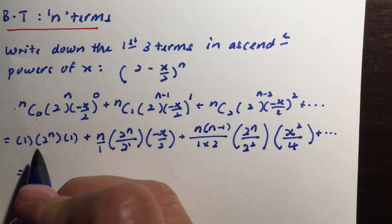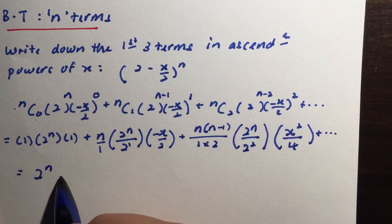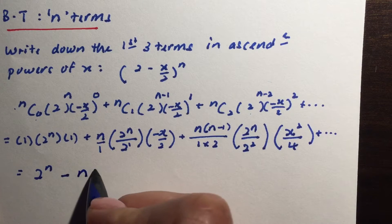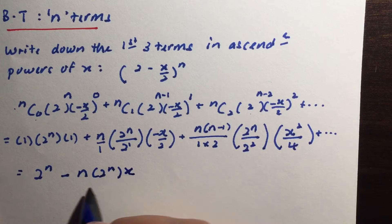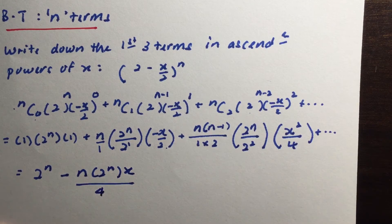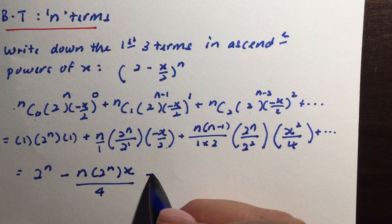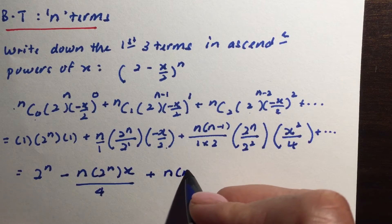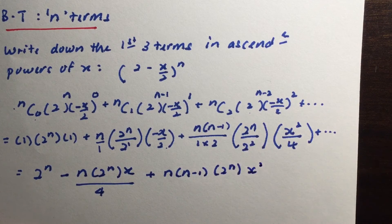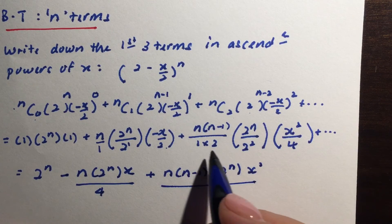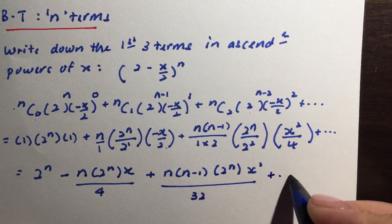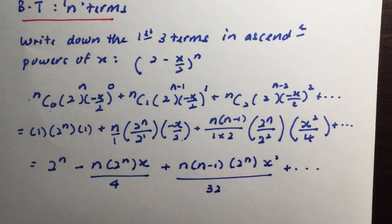Tidying everything up: the first term is 2^n. The second term has a negative sign, giving us negative n times 2^n times x, with denominator 1 times 2 times 2 equals 4. The third term gives n(n-1) times 2^n times x squared, with denominator 1 times 2 times 4 equals 32. That's your expansion in terms of n.